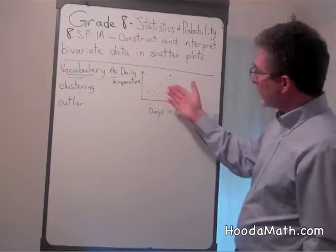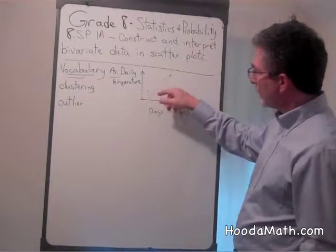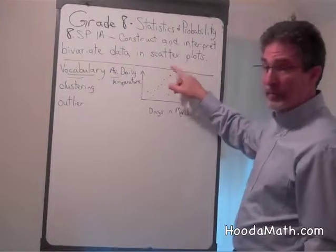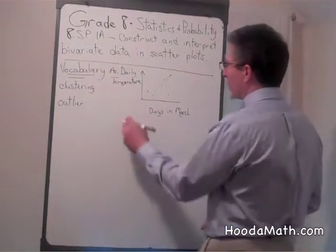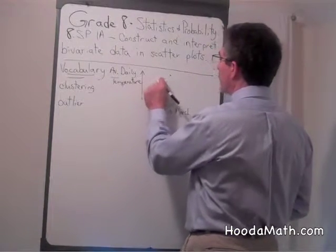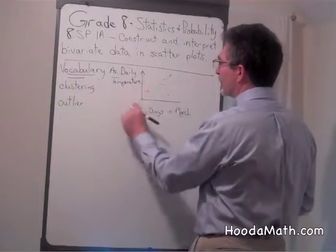When we see a scatter plot, which means that the dots are all over the place, they're not in a straight line, what we do is we look for clusters or clustering, so we can see that they're generally in this vicinity.